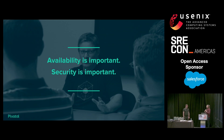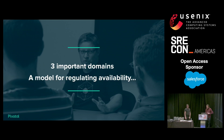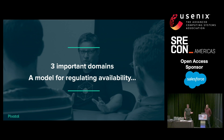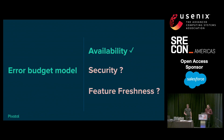Availability is important. Security is also important. And feature freshness is also very important. In operating a system, there are multiple important domains — we've picked on three. We have a model for regulating one of those — availability — that works really well: the error budget model. The question we're asking is: can we use similar mechanics to think about security and about feature freshness?